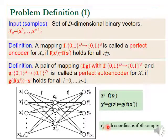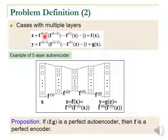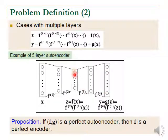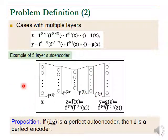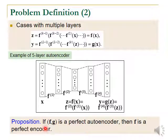Here, x_ij denotes the j-th coordinate of the i-th sample. This pair f, g can be extended to multiple layers — for example, five layers. The encoder f corresponds to the composition of f1 and f2, and the decoder g is a combination of functions f3 and f4. We have this proposition: if f, g is a perfect autoencoder, then f is a perfect encoder. The proof is easy, but I omit details because of the time limit.